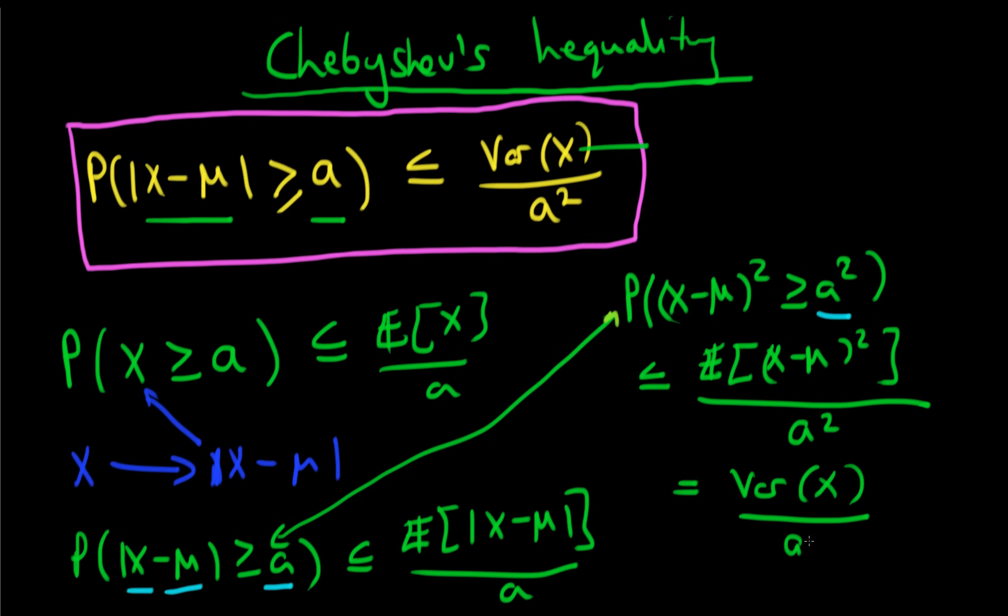And the bottom just stays as a squared. And remembering that these two probabilities up here and down here are exactly the same, we have actually gone ahead and proved the statement which we have up here in the parenthesis.